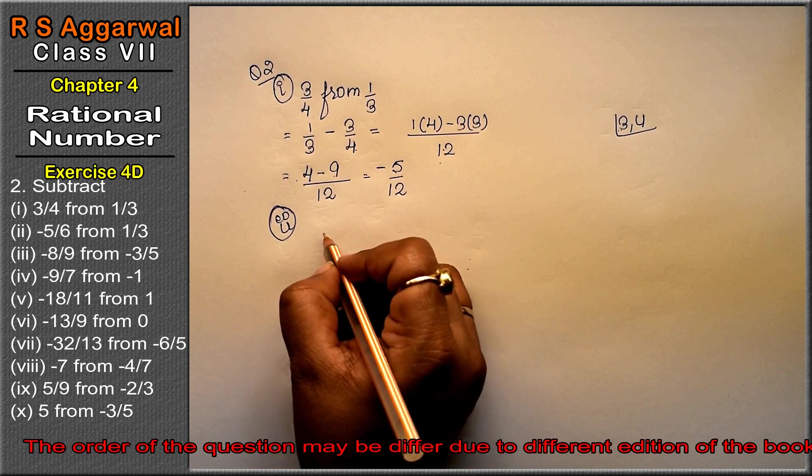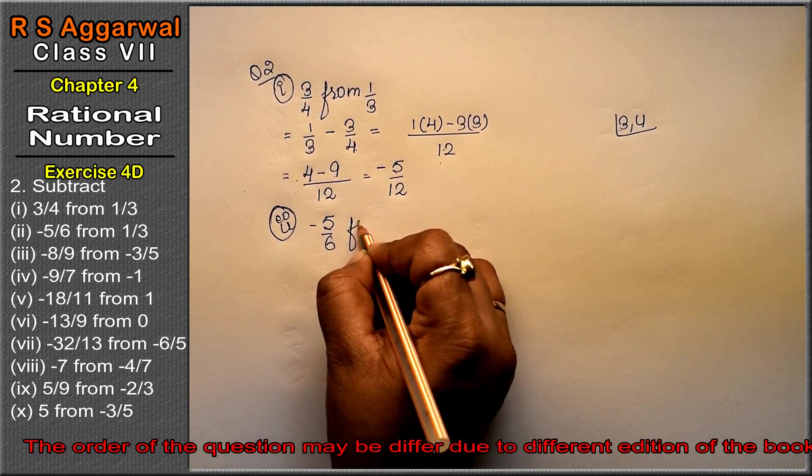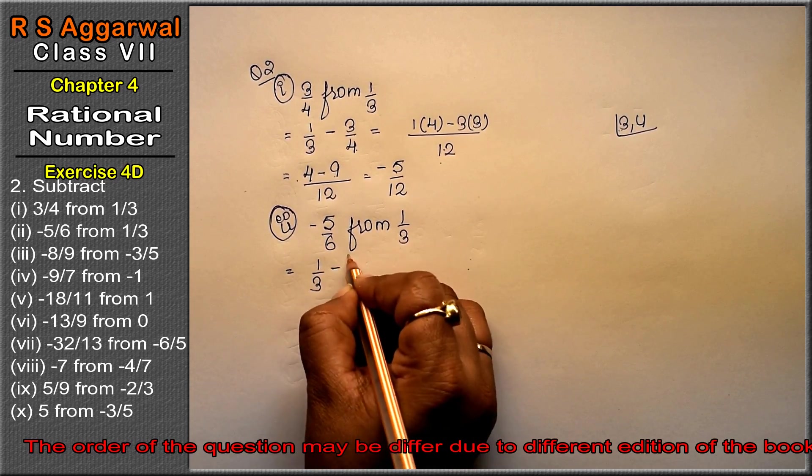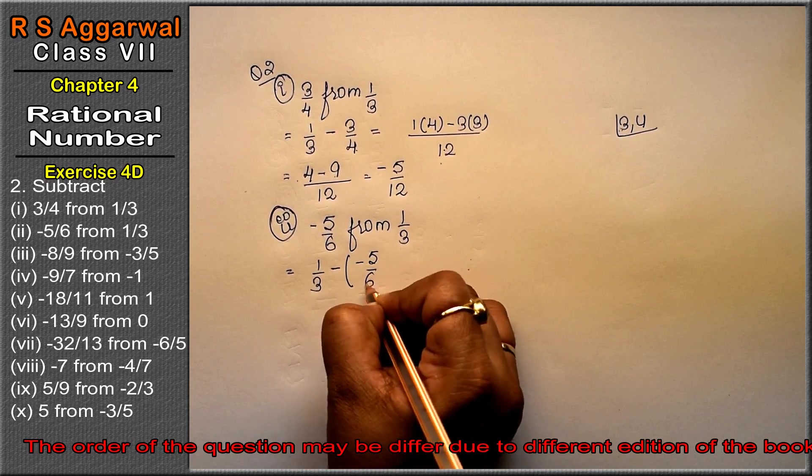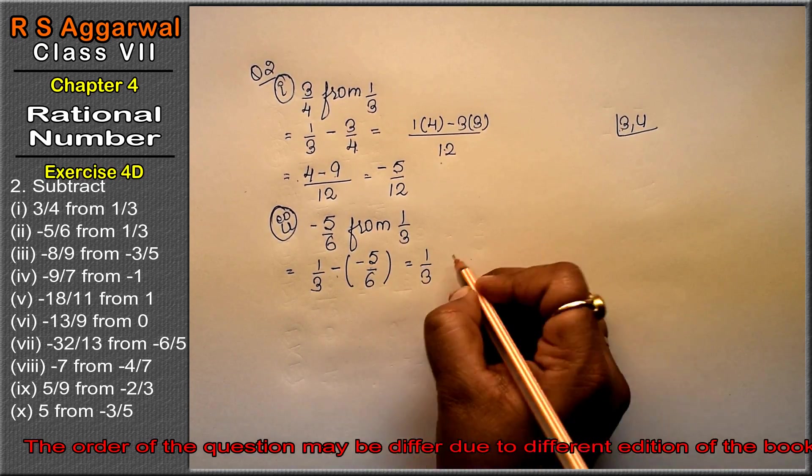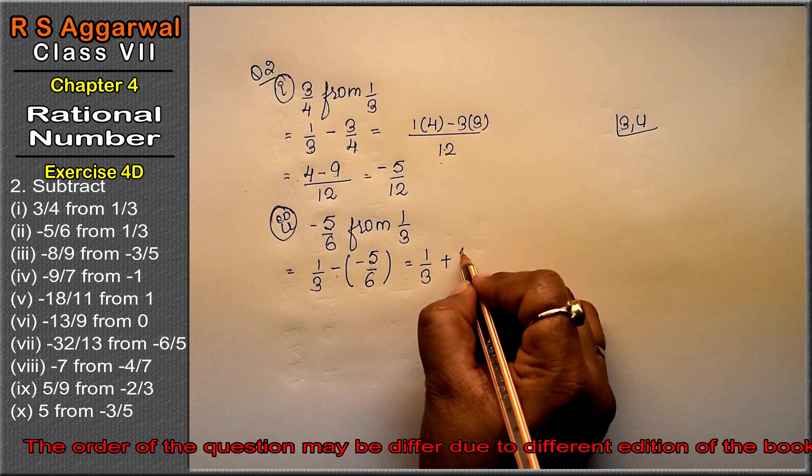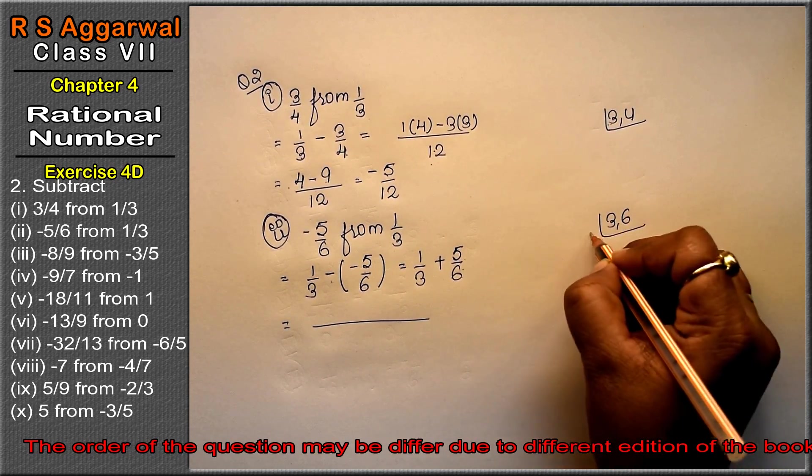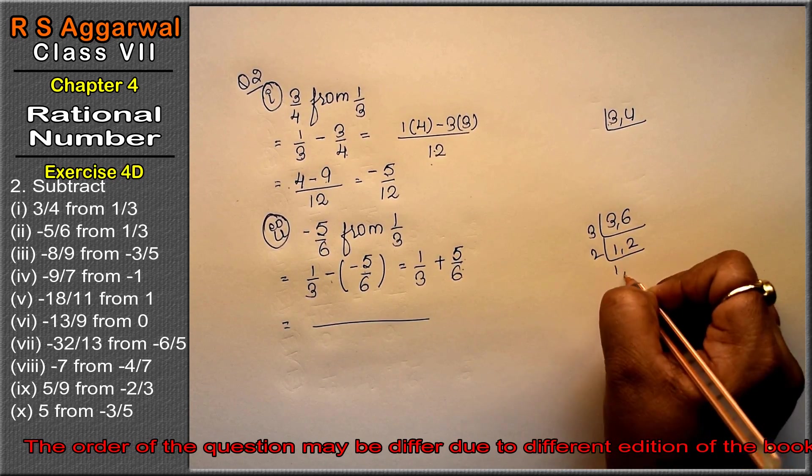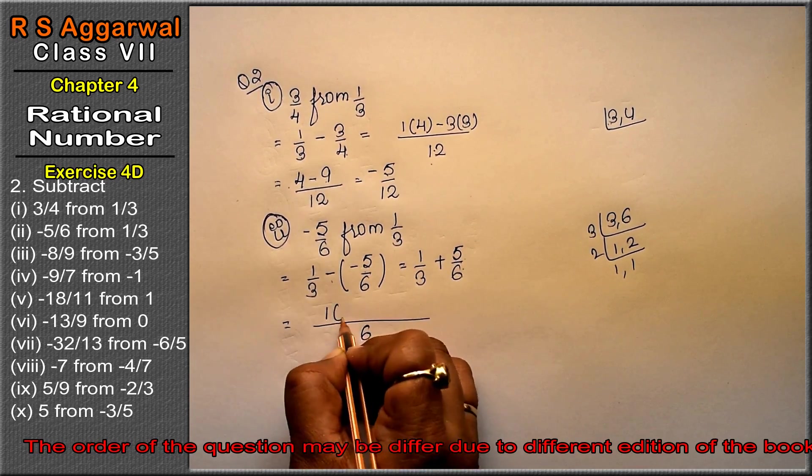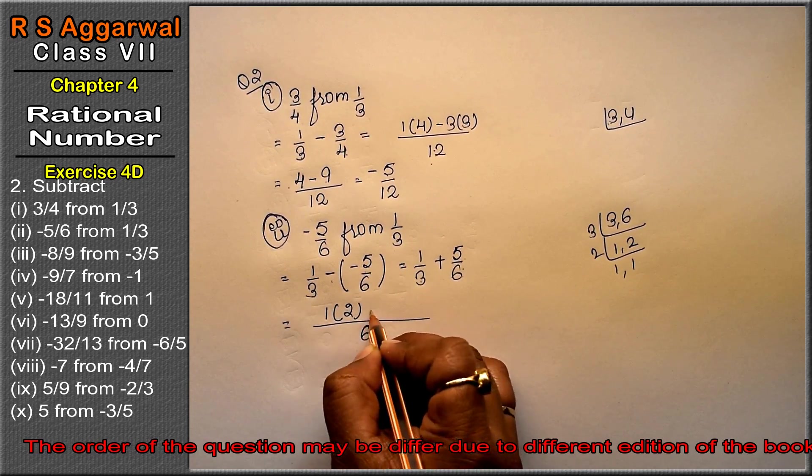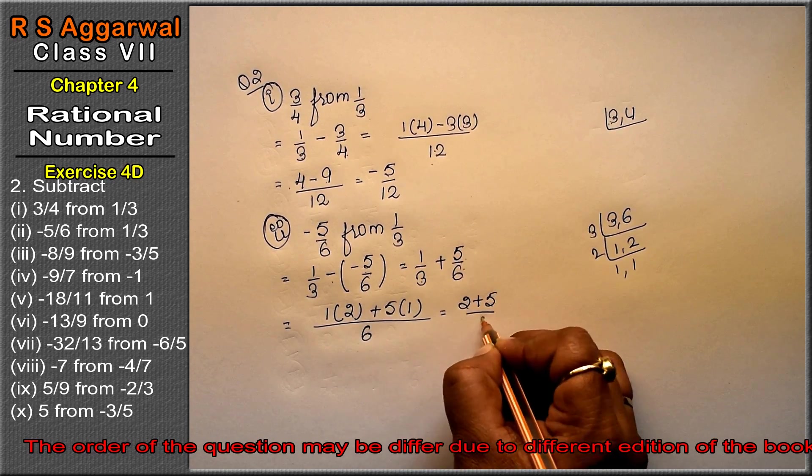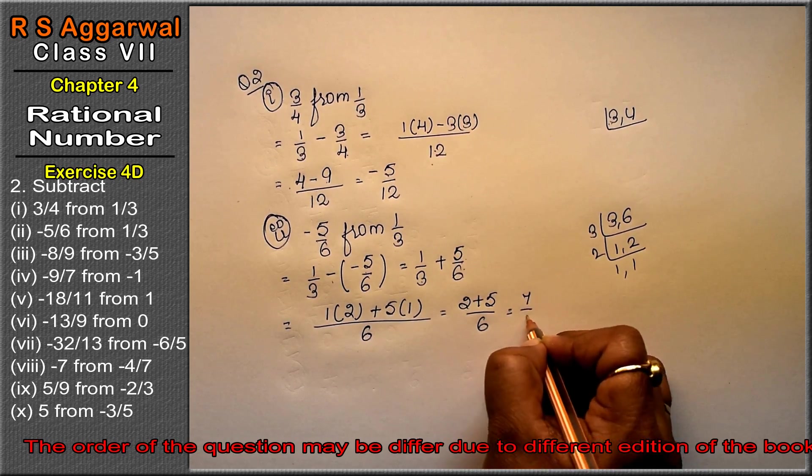Second part: minus 5 upon 6 from 1 upon 3. So 1 upon 3 minus minus 5 upon 6. Opening bracket: 1 upon 3 minus minus is plus. Bracket means multiplication, that's why minus minus is plus. 5 upon 6. LCM of 3 and 6 is 6. 1 multiplied by 2 is 2, plus 5 multiplied by 1 is 5. 2 plus 5 upon 6 equals 7 upon 6 is the answer.